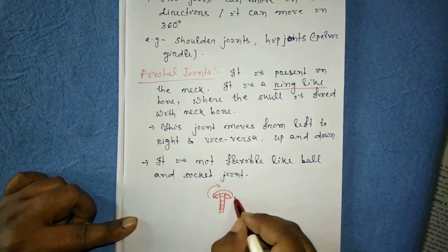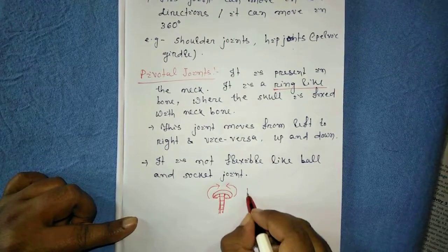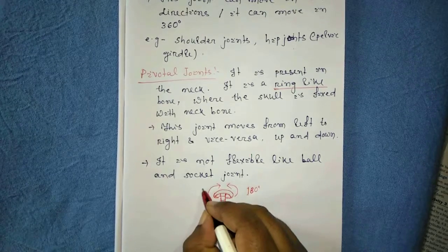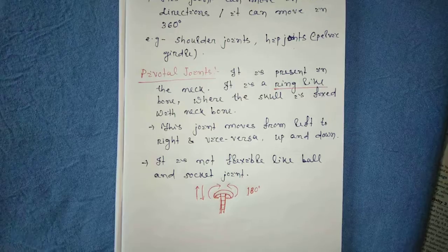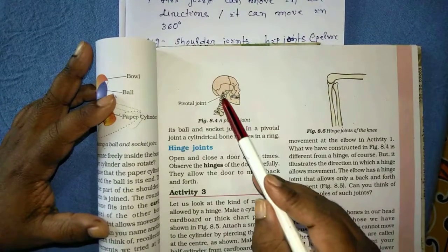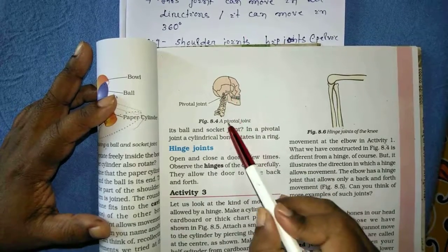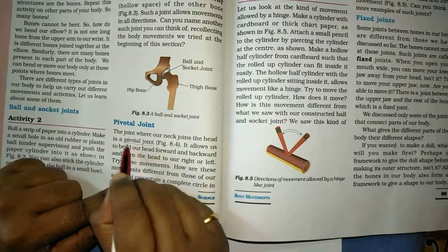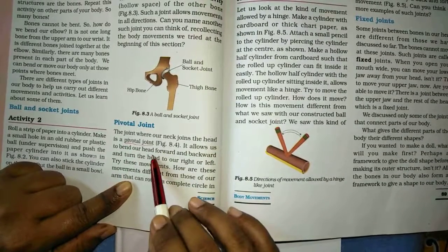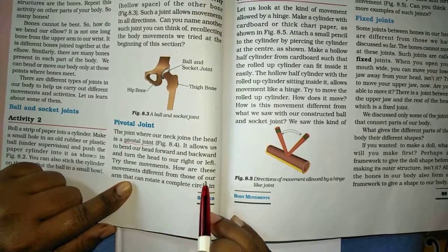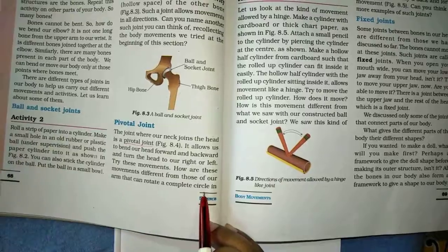We can rotate it towards left or right, but not in a full circle. We can move it 180 degrees — that is left to right, right to left, and up and down. We cannot move it in 360 degrees or in a circular movement like ball and socket. This pivotal joint has the skull bone fixed with the neck.